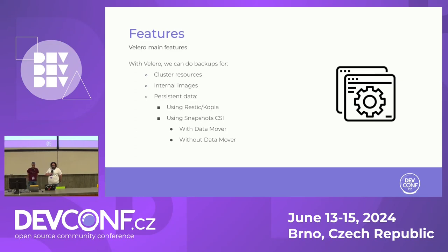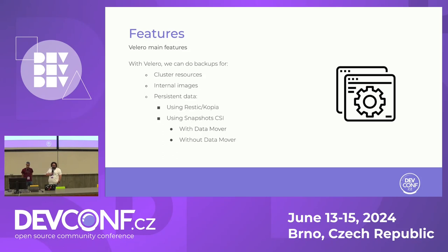Velero works both on-premise and in a public cloud. For persistent data, we have two options: use RESTIC or Kopia, which allows us to backup any type of volume, or use the snapshot capabilities with CSI. For snapshots, we have the possibility to add a data mover or not. With a data mover, we can move our snapshot to another storage different from the volume we want to backup. This way we provide better data security, because if we leave the snapshot in the same storage as the original volume and we have a problem with that storage, we will lose both the volume and the snapshot. The data mover helps us to mitigate this risk.